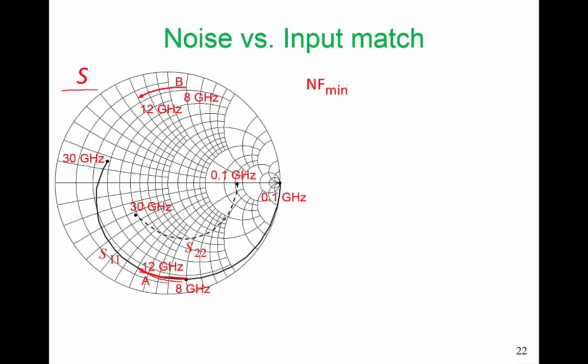That reflection coefficient looking into our active device is going to be dominated by S11. And that's largely because S12 is small. Very approximately, the input matching network wants to have a gamma-S, which is the complex conjugate of that curve A, which is curve B here. If we ignore the effect of our load and the finite effect of S12, we want gamma-S looking into our input matching network to approximately have this characteristic, rotating in the anticlockwise direction as frequency increases.